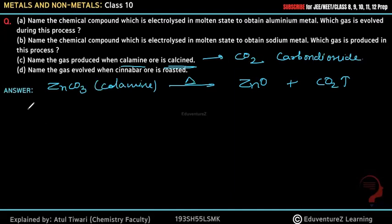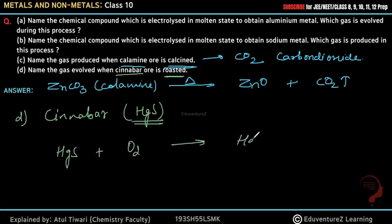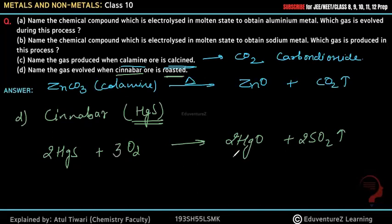Question 4: Name the gas evolved when cinnabar ore is roasted. Cinnabar ore is HgS, which is a sulphide ore. Roasting means heating in the presence of air (oxygen). When HgS is heated in the presence of air, HgO is formed and sulfur dioxide gas is released. Balancing the equation gives: 2HgS + 3O₂ → 2HgO + 2SO₂. Answer: sulfur dioxide (SO₂) gas is evolved.